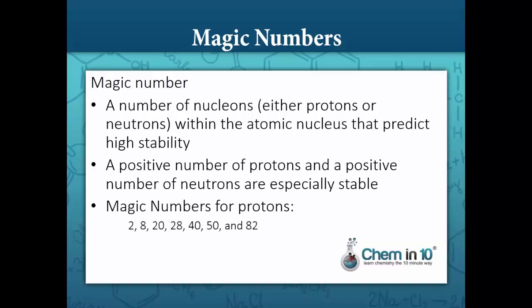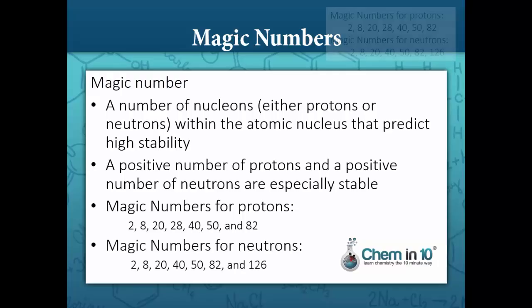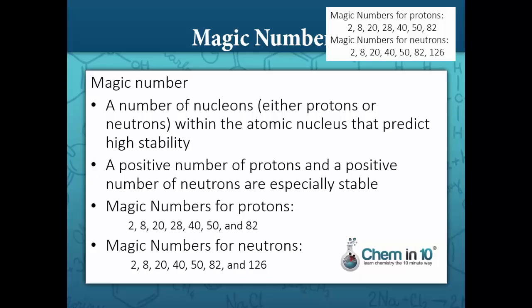In addition to having an even number of protons and neutrons, there are certain magic numbers that are especially stable. For protons, these are: 2, 8, 20, 28, 40, 50, and 82. For neutrons, these are: 2, 8, 20, 40, 50, 82, and 126. If the nucleus has one of these magic numbers of protons and/or neutrons, it will be especially stable.